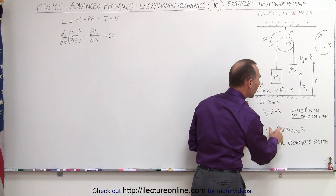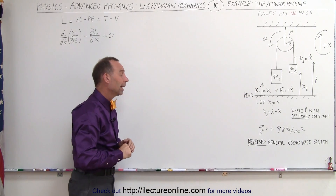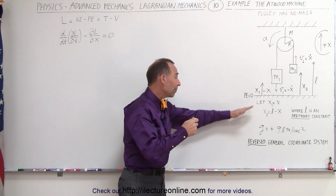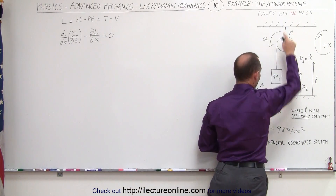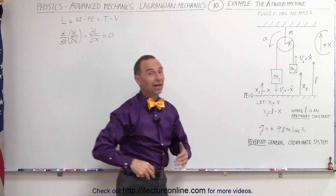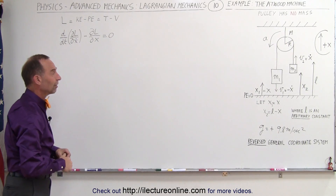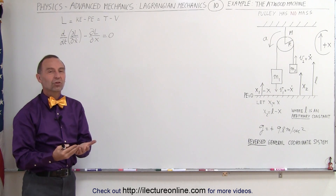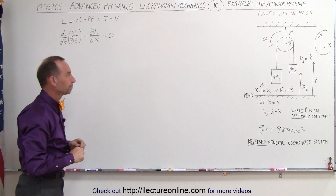G is still a positive 9.8 meters per second squared. We're going to use the same example here. Notice that the pulley has no mass, but we're going to reverse the generalized coordinate system and see that it still works exactly the same way. That's the beauty of the Lagrangian — we can use any coordinate system pointing in any direction, and it will still work.